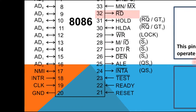The CLOCK signal provides basic timing for processor operation and bus control activity. It uses an asymmetric square wave with 33% duty cycle. The frequency range varies by version, with options of 5, 8, and 10 MHz. The supply voltage is 5 volts.